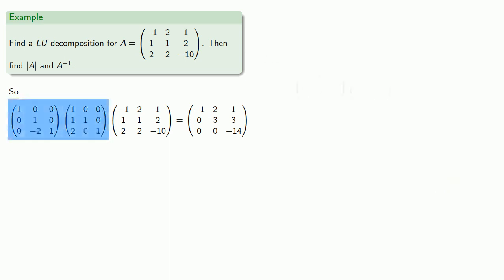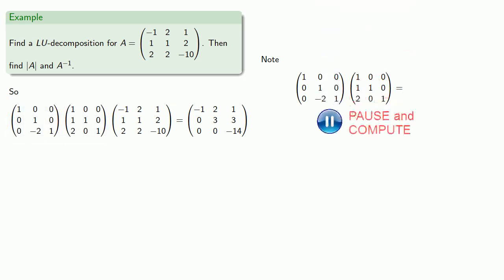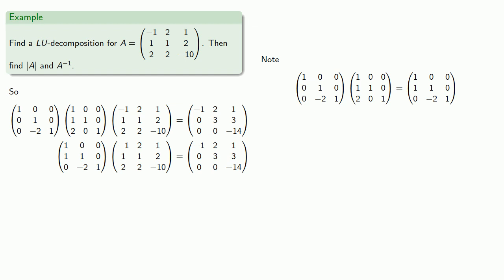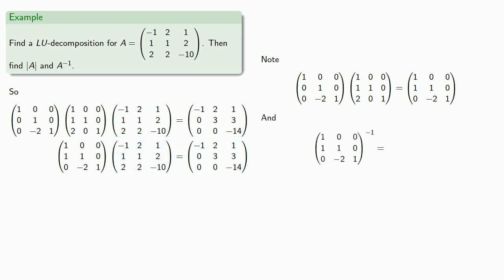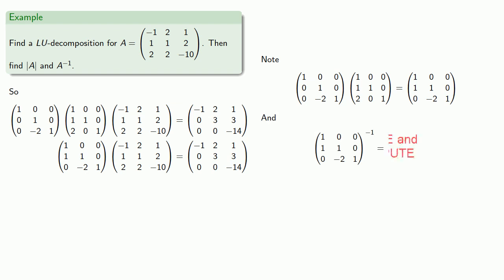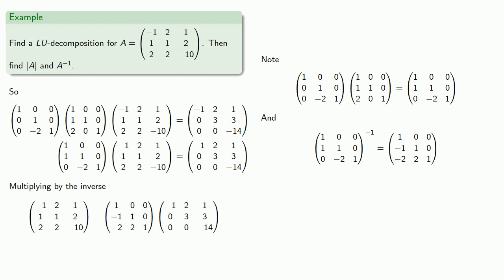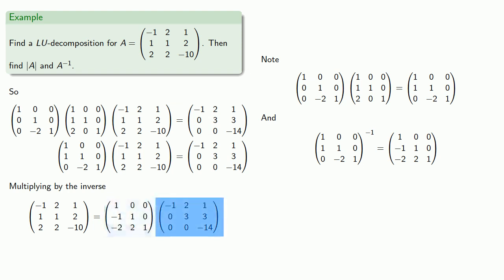Now we can multiply these two lower triangular matrices to give another lower triangular matrix. And so here we have a lower triangular matrix applied to our matrix giving us an upper triangular matrix. Our last step is multiplying by the inverse of the lower triangular matrix, and if we multiply both sides by the inverse, we get our matrix written as a product of a lower triangular matrix and an upper triangular matrix.